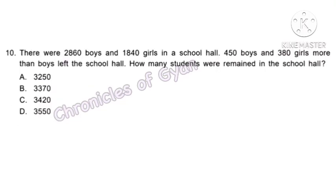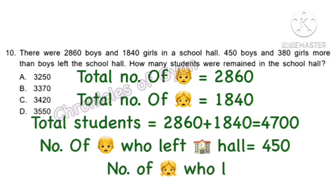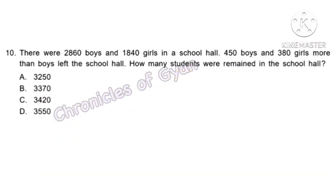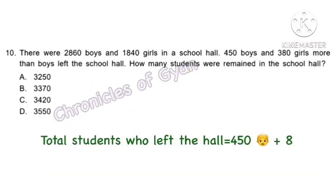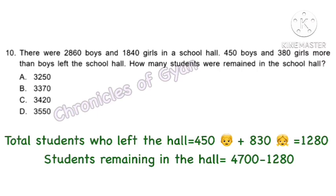Question 10. There were 2,460 boys and 1,440 girls in a school hall. 450 boys and 380 girls more than boys left the hall. Girls who left: 450 plus 380 equals 830. Total students who left: 450 plus 830 equals 1,280. Students who remained: 4,700 minus 1,280 equals option C — 3,420.